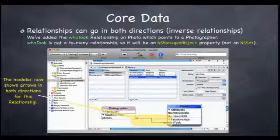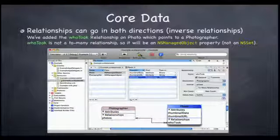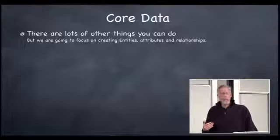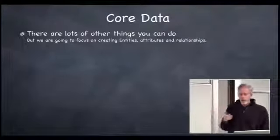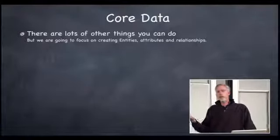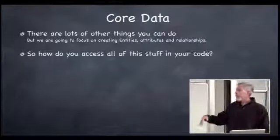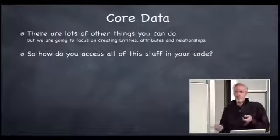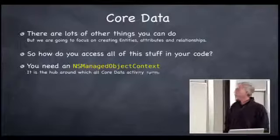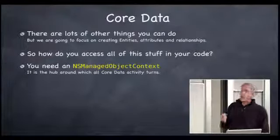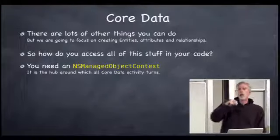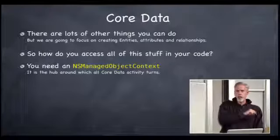We're going to focus in this class on creating entities, attributes, and relationships, and then working with those in our object-oriented world. To access all this stuff in code, you need a magic object called NSManagedObjectContext. This is the object that manages all querying and creation of objects in the SQL database using the mapping. One important caveat: NSManagedObjectContext and NSManagedObject are not thread-safe, which will matter next week when your assignment involves threading.